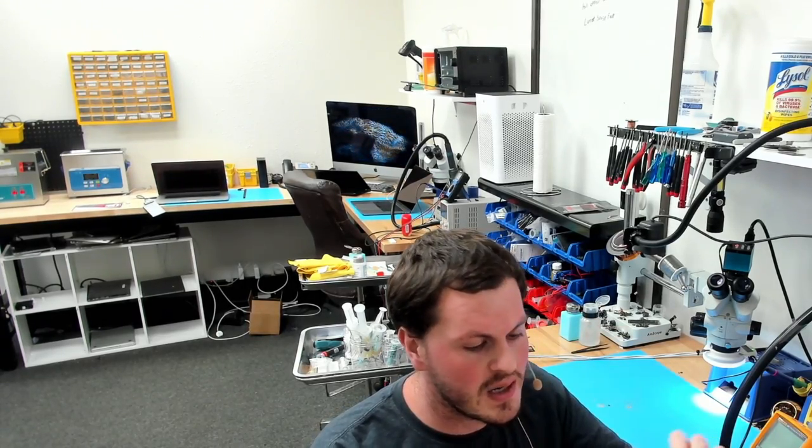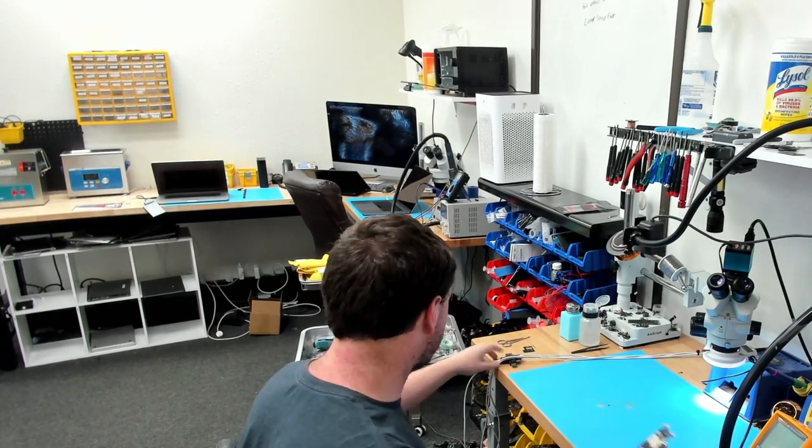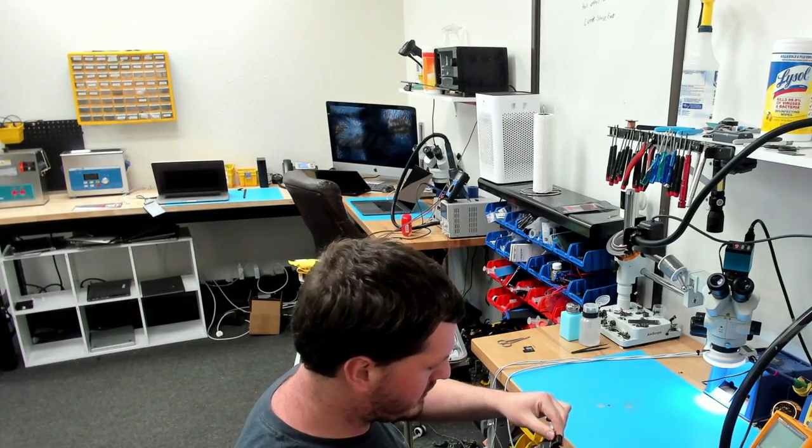All right, today we're going to be having a look at this 2019 MacBook Air that randomly stopped turning on. We already have the board out of the enclosure, and when we plug it in on the USB amp meter, we get around 20 volts and pretty much no amperage. So I'm going to plug that in to get the exact measurement for you guys.